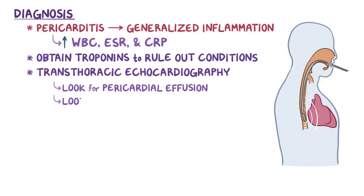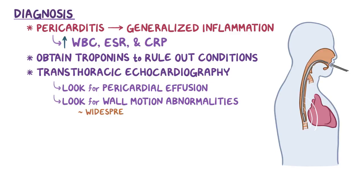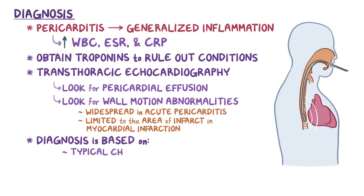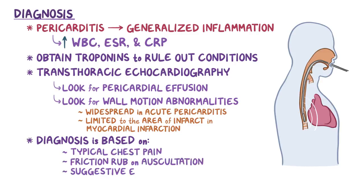In addition, echocardiography can be used to look for wall motion abnormalities, which are widespread in acute pericarditis, but limited to the area of infarct in a myocardial infarction. Diagnosis of acute pericarditis is based on having the typical chest pain, a friction rub on auscultation, suggestive ECG findings, and evidence of a pericardial effusion.